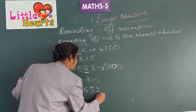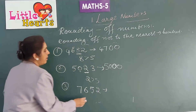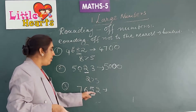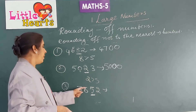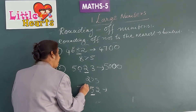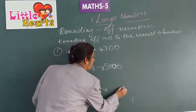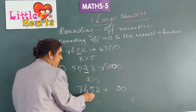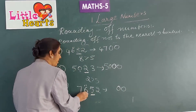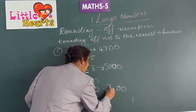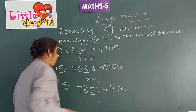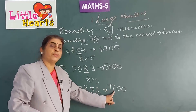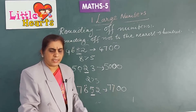Next, 7,652. Here the tens place digit is 5. Since it is 5 or more than 5, we add 1 to the hundreds place digit and put 2 zeros in the ones and tens places. It becomes 7,700. So 7,652 is rounded to 7,700.